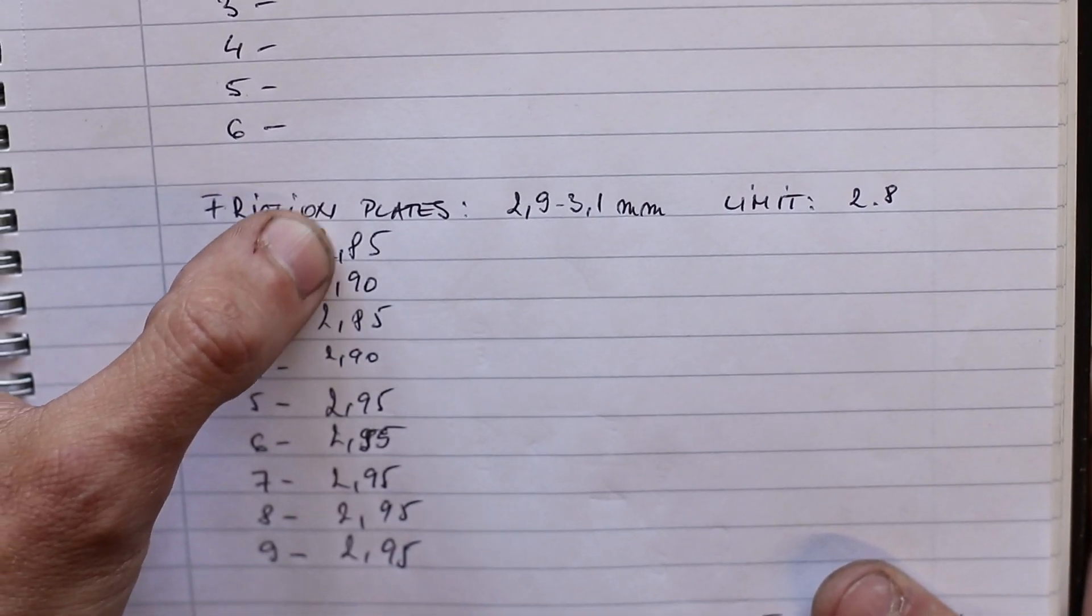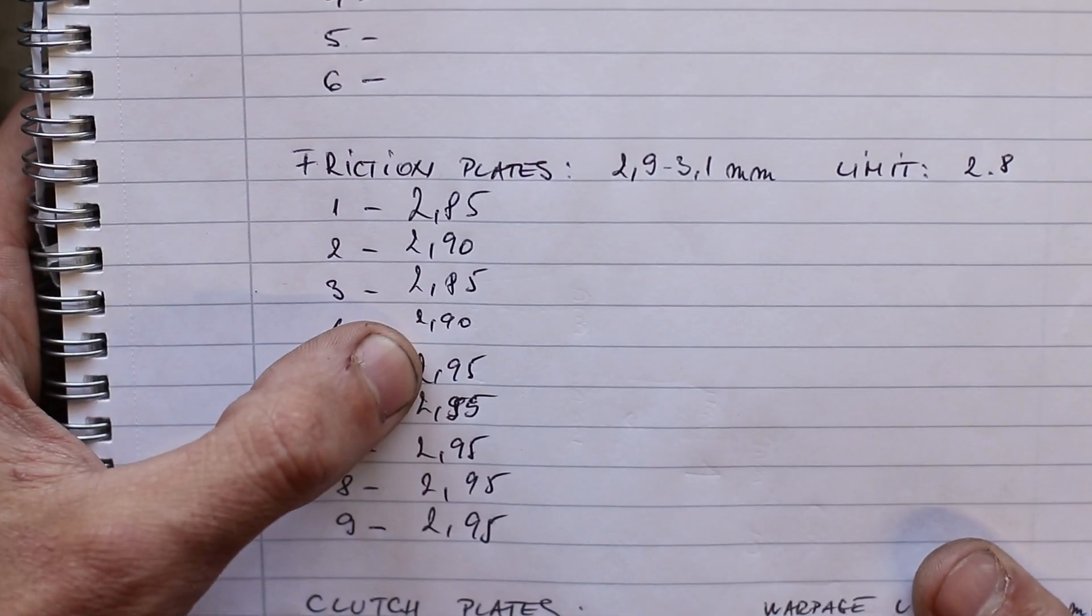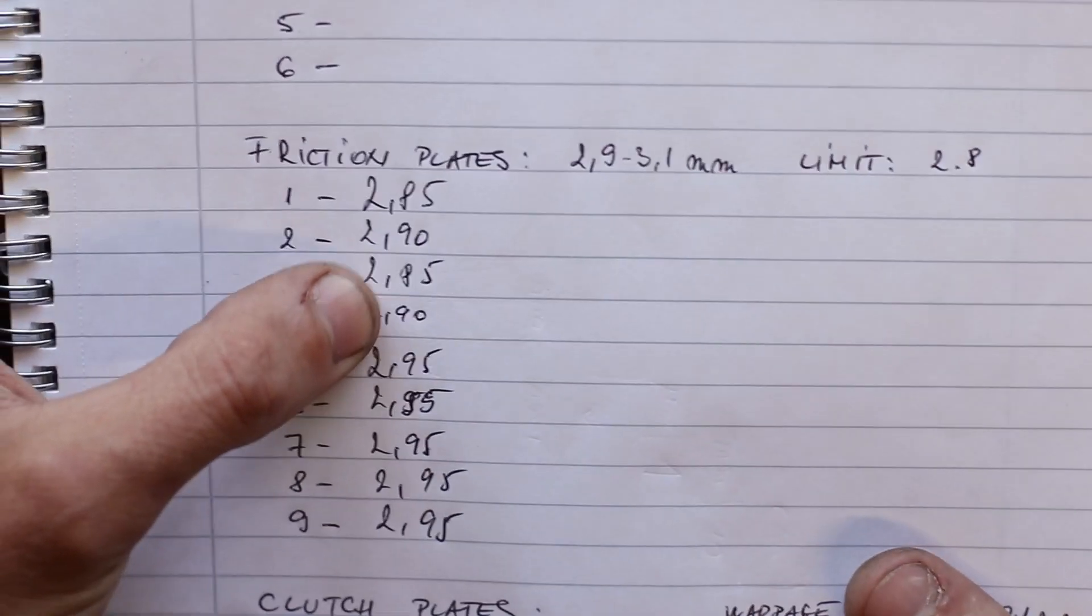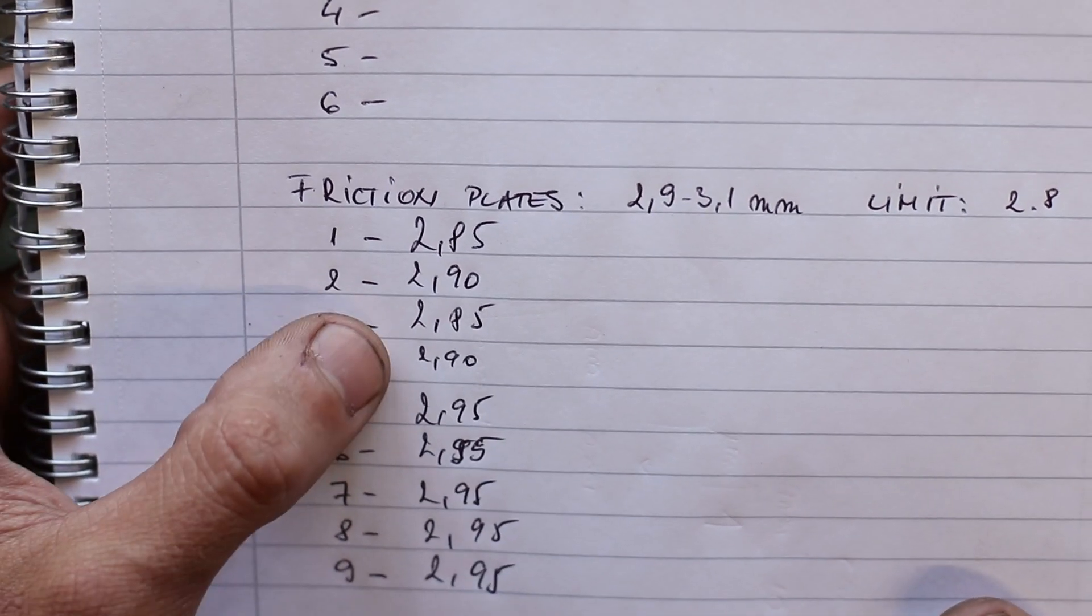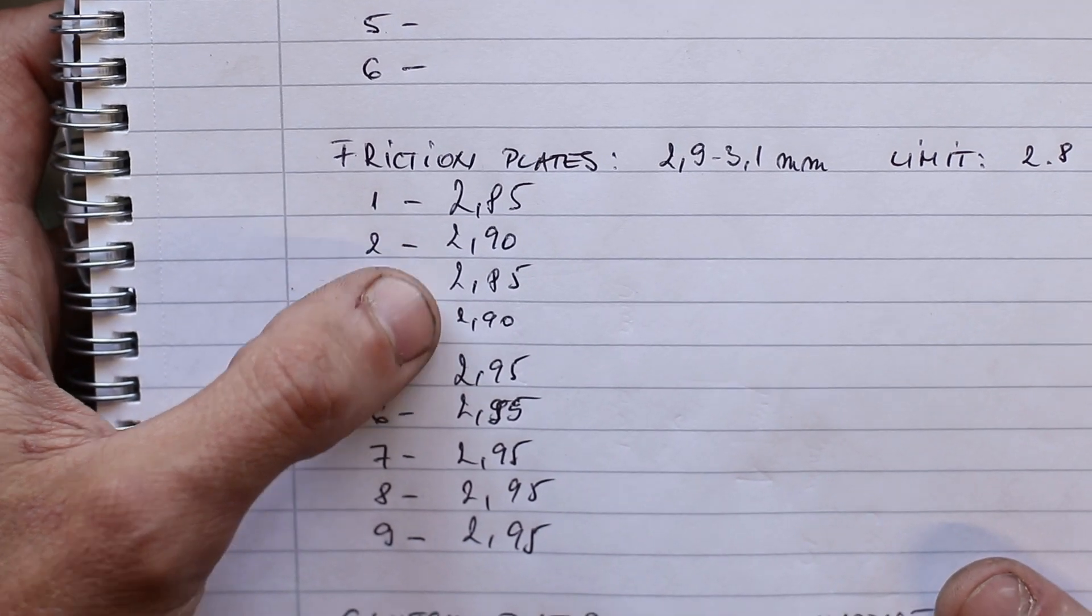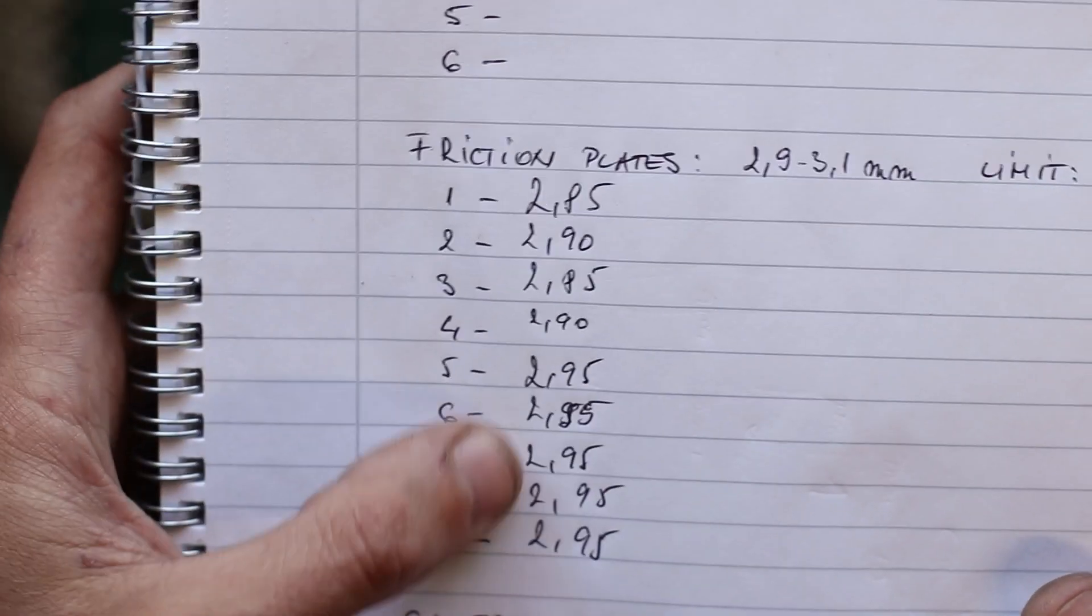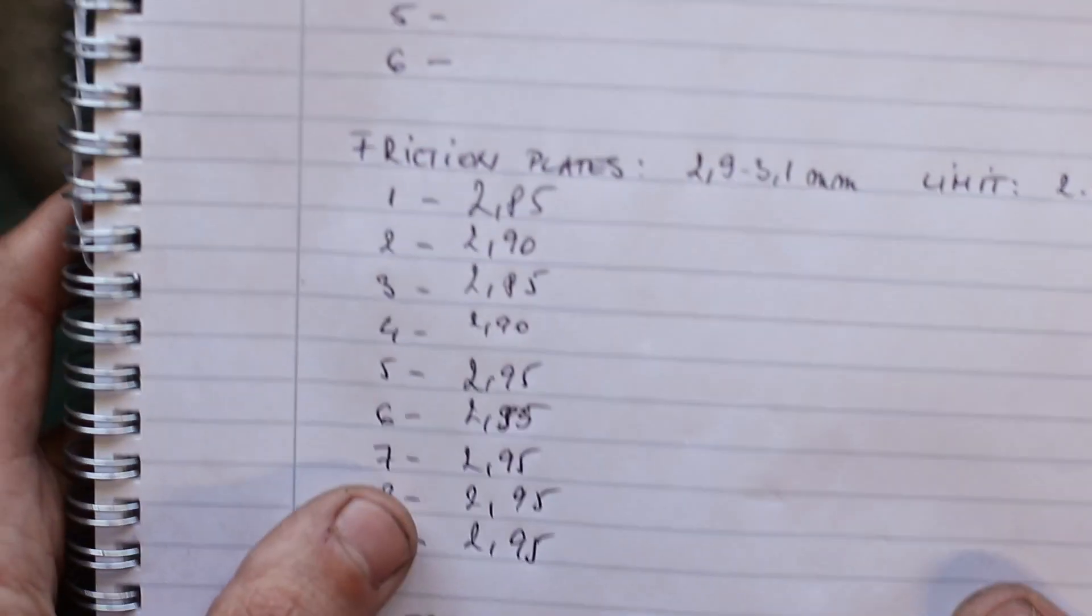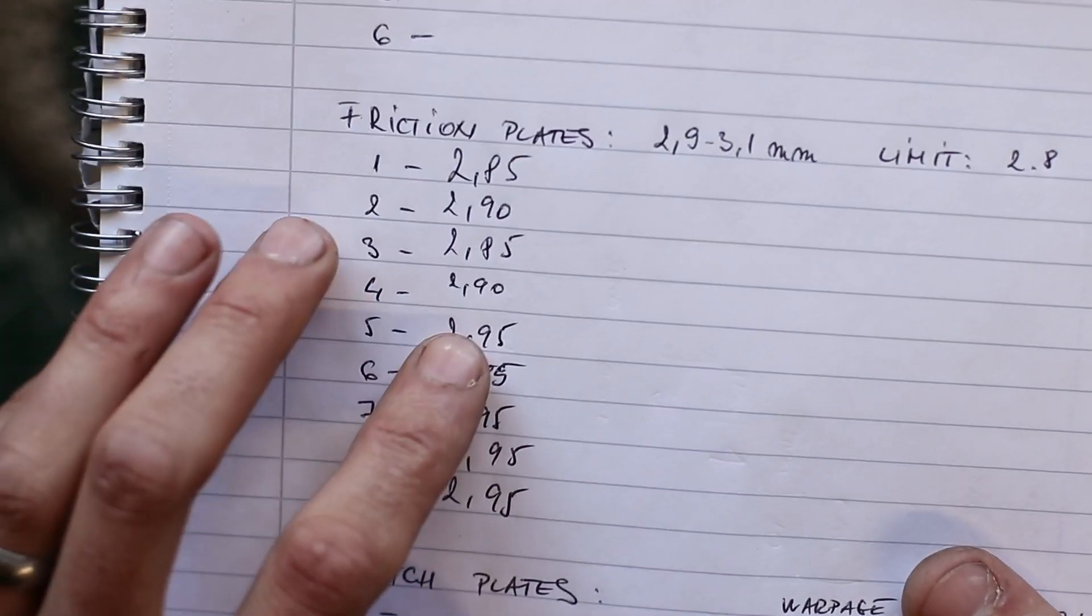2.85 is a bit too close to the limit for me, but I've mentioned in the first video I've got a clutch on order. It still hasn't turned up yet, delivery must have been delayed or something. So we're going to put a new clutch in anyway, so I'm not too fussed about the friction plates because we've got new ones.